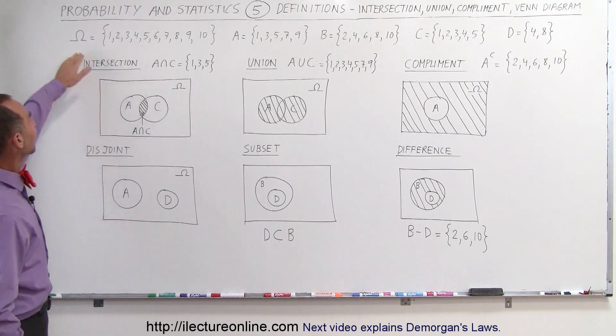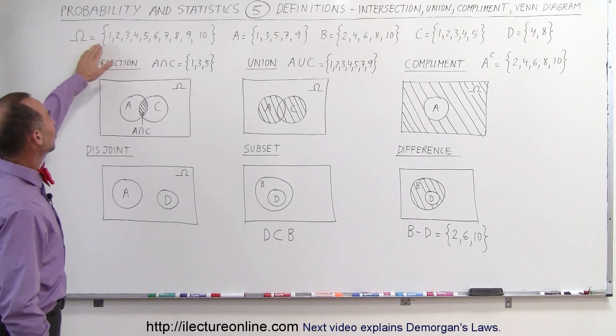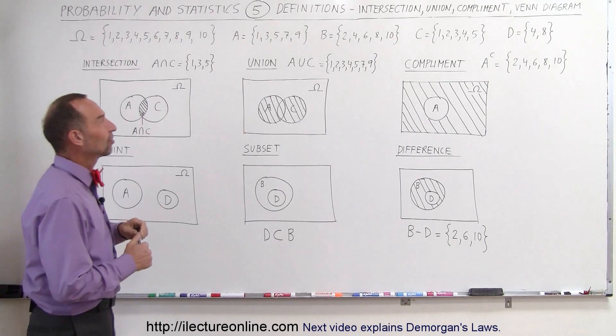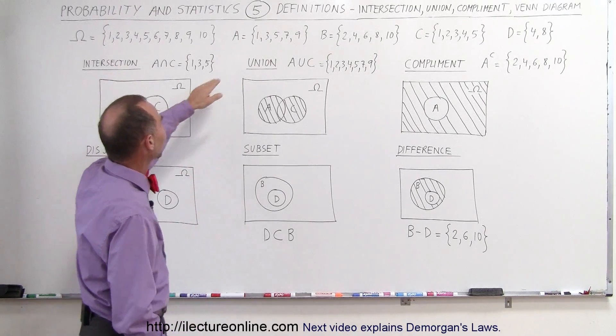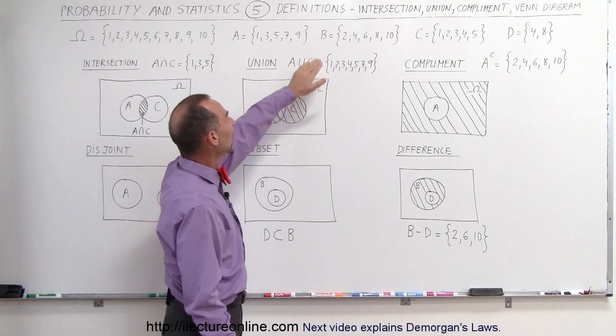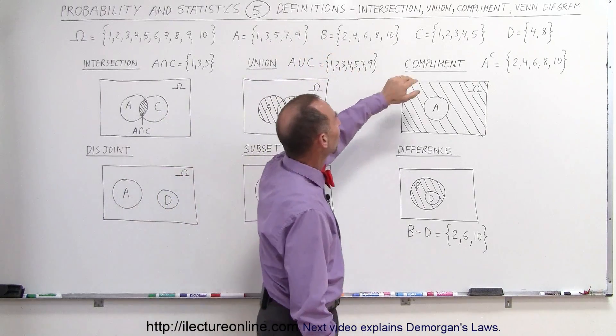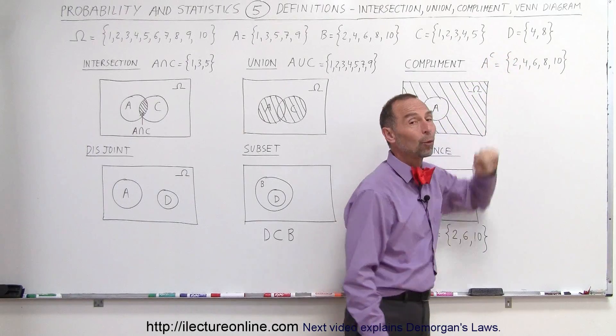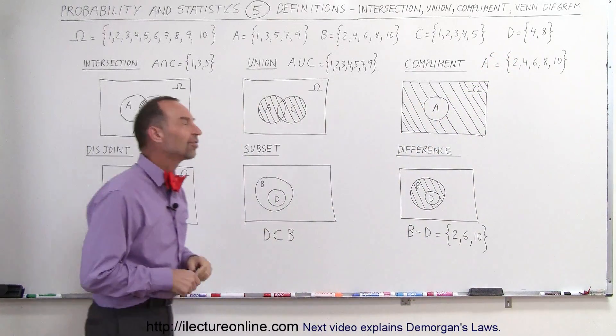Let's say we have the sample space of integer numbers from 1 through 10. Then we have four sets that are subsets of the sample space: set A which are the odd numbers, set B which are the even numbers, set C which are the first five numbers, and set D which is numbers 4 and 8.